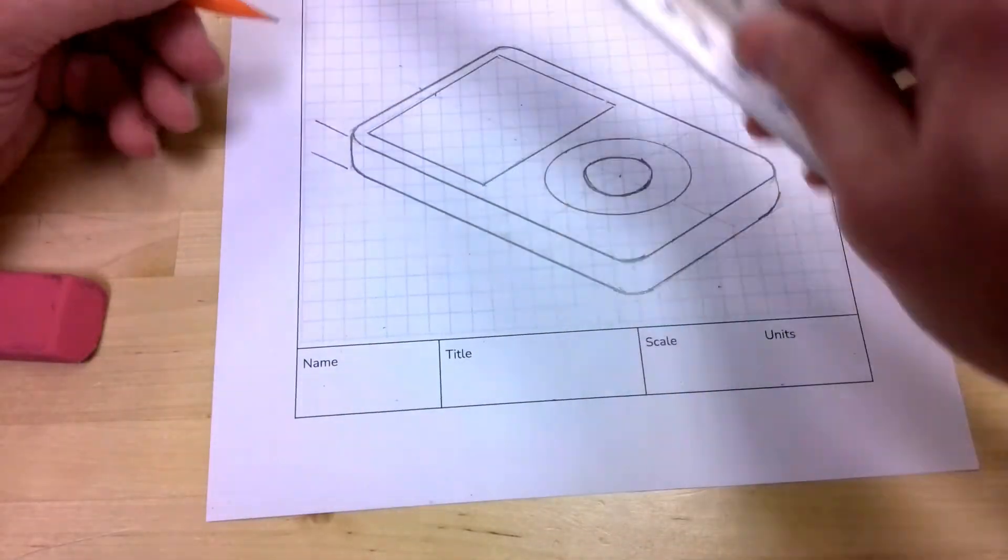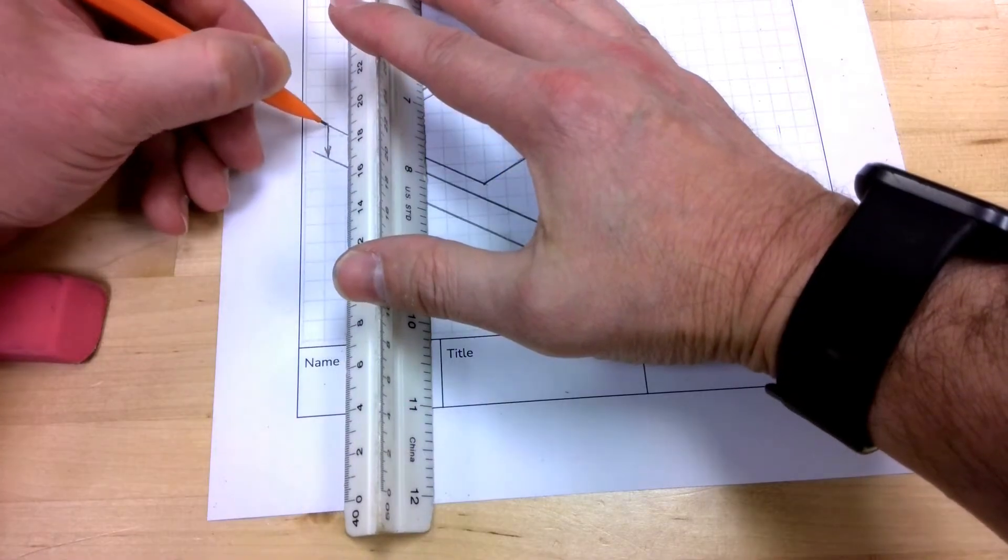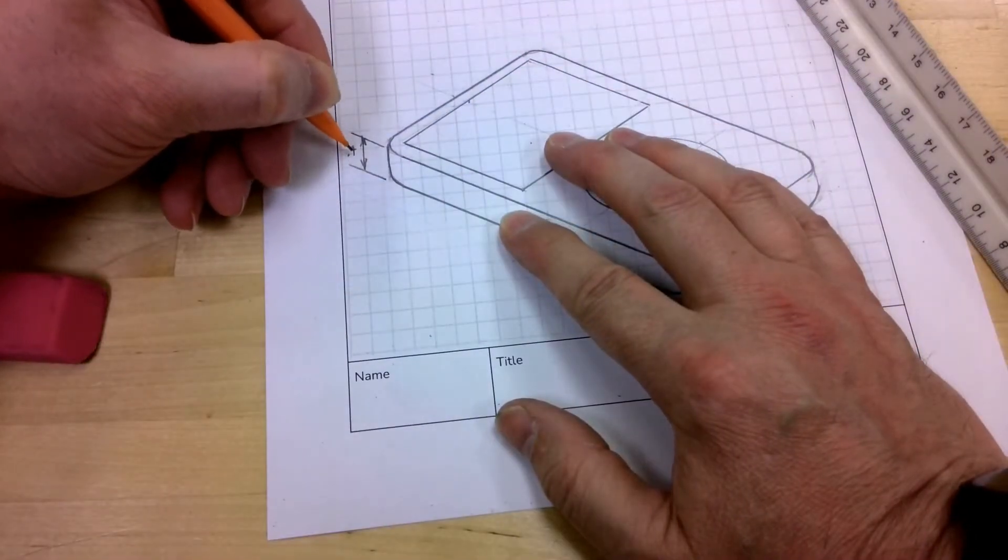Now as needed, we can add our dimensions. So in isometric view, your dimensions are also at the same angles.